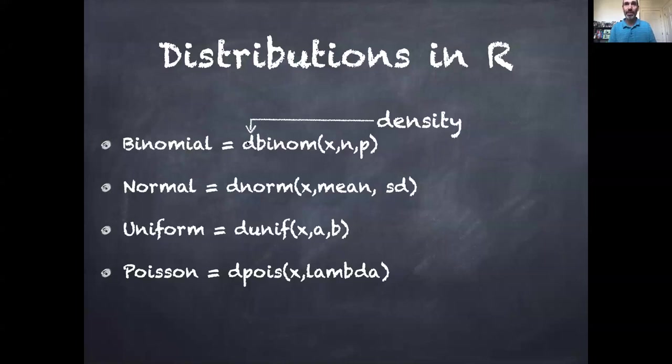are represented beginning with the letter D to represent probability density, followed by a shortened abbreviation for the distribution name, such as binomial represented by binom, normal by norm, uniform by unif, and Poisson by pois.